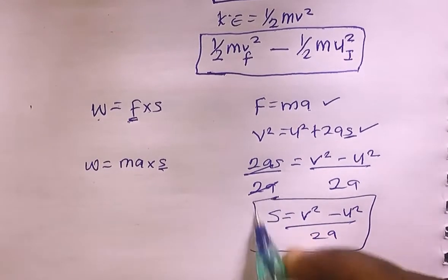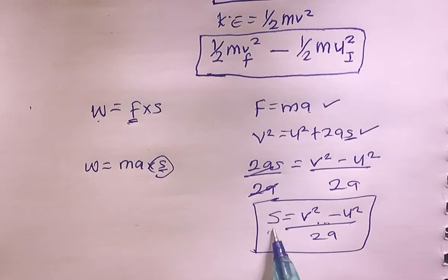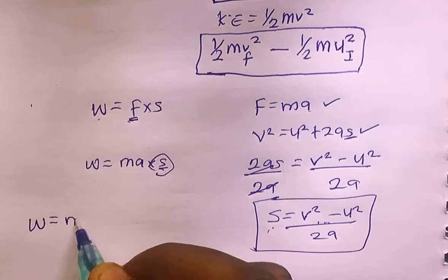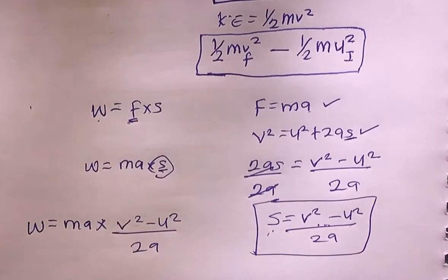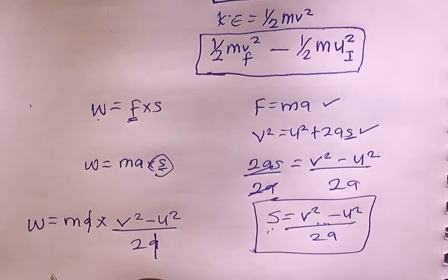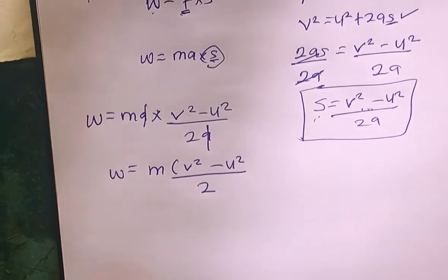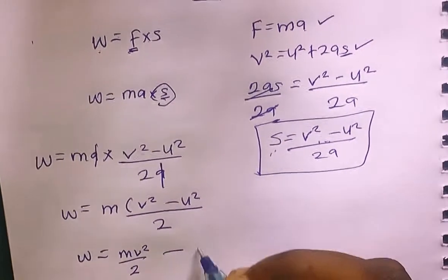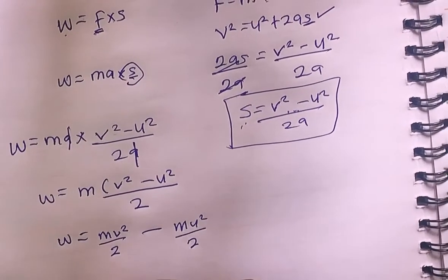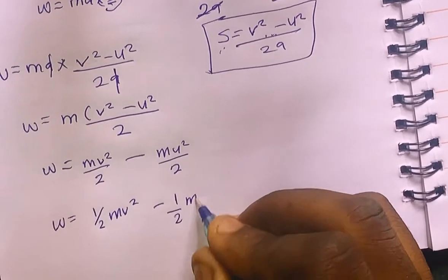Let's substitute this value into W = ma × x. Replacing x with (v² − u²) / 2a, we get W = ma × (v² − u²) / 2a. Opening the brackets: W = mv²/2 − mu²/2, which simplifies to W = ½mv² − ½mu².